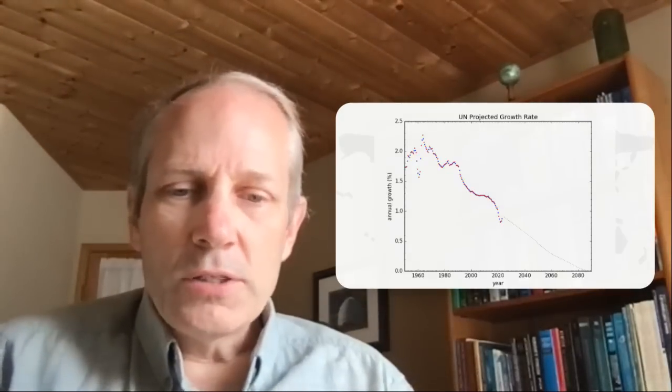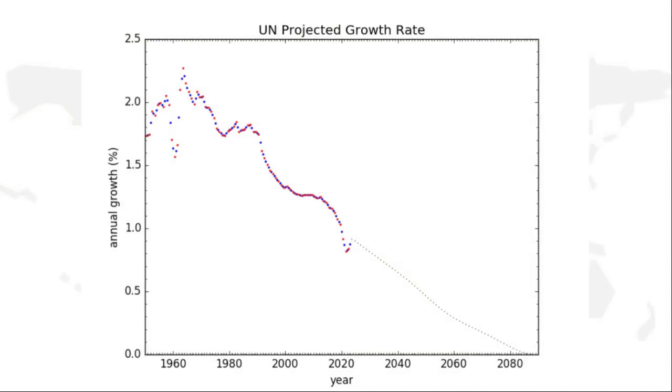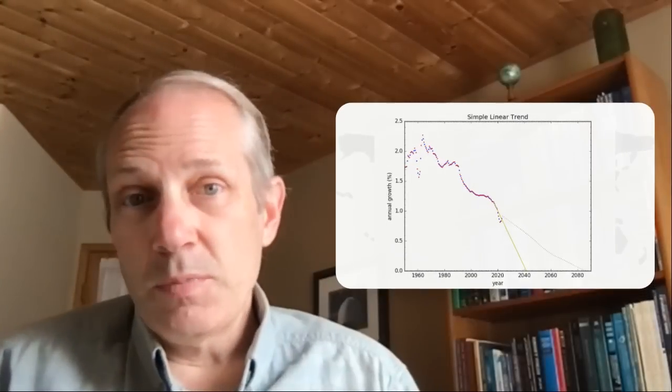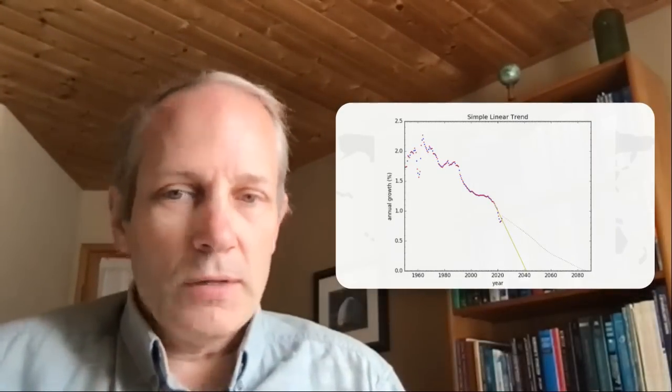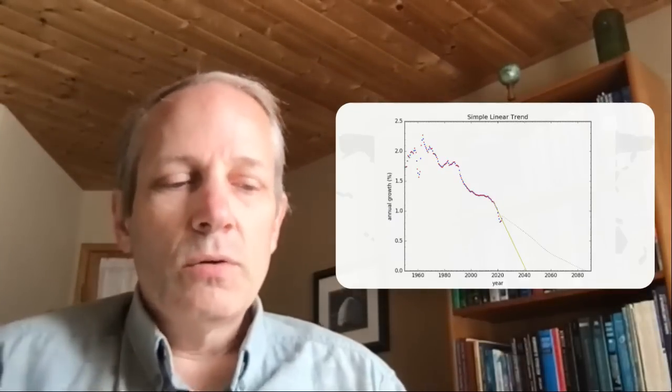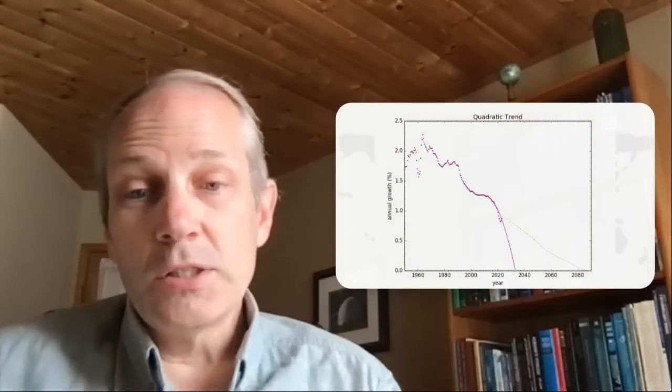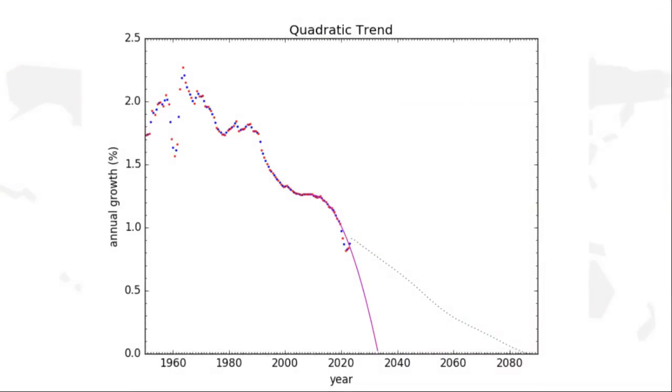But the period just before 2020, before the pandemic, was going down pretty steeply. If we just projected that, you'd hit zero around 2040. So when you hit zero population growth, that's the moment at which population peaks. So zero growth means you're at the top. It could also go not just linearly, but quadratically because this thing is curving. And that would hit zero growth in the 2030s.